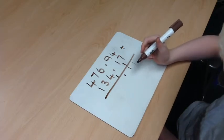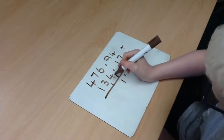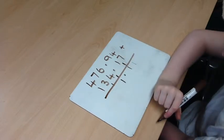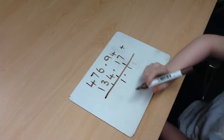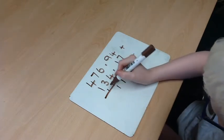So add the 1 is 11. Write the carried 1 here. 7 add 3 is 10. Add the 1 is 11 again. With the carried 1 here.